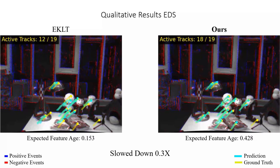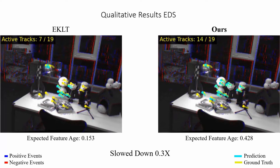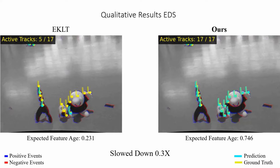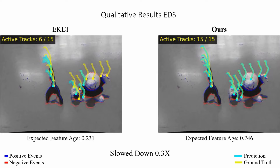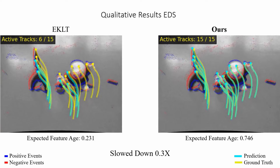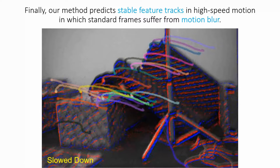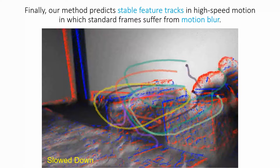The performance boost confirms the capability of our data-driven method to deal with high-resolution data in various 3D scenes with different lighting conditions and noise patterns. Furthermore, our method can predict stable feature tracks in high-speed motion in which standard frames suffer from motion blur.